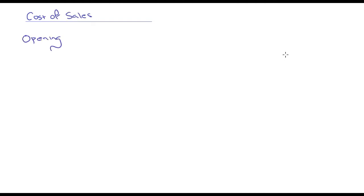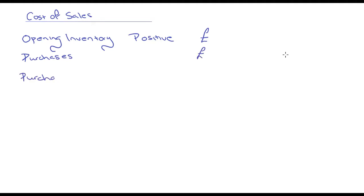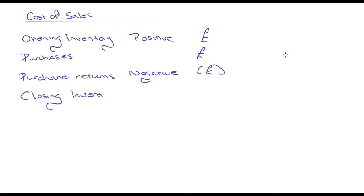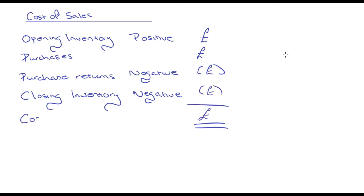Cost of sales is made up of opening inventory, which is a positive, and purchases, which is also a positive. Then we have purchase returns, which is a negative, and closing inventory, which is also a negative. Those elements together give you your cost of sales.